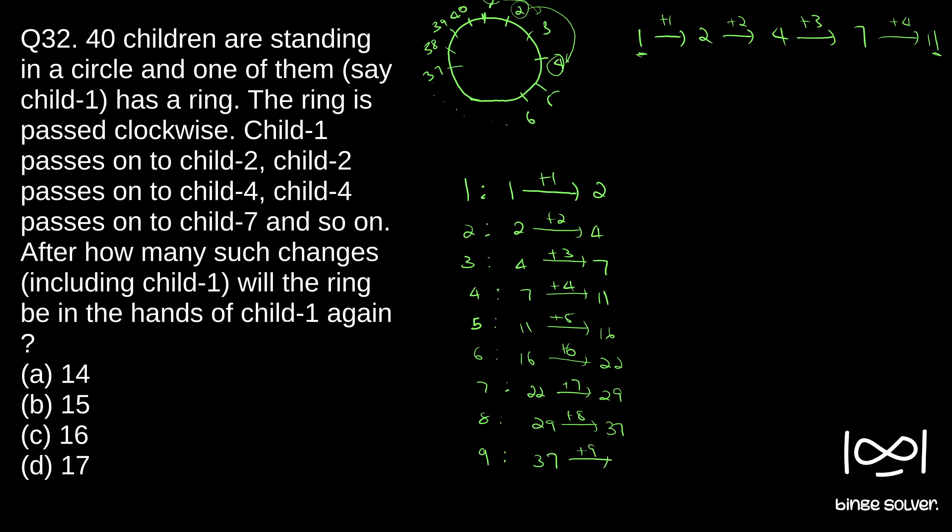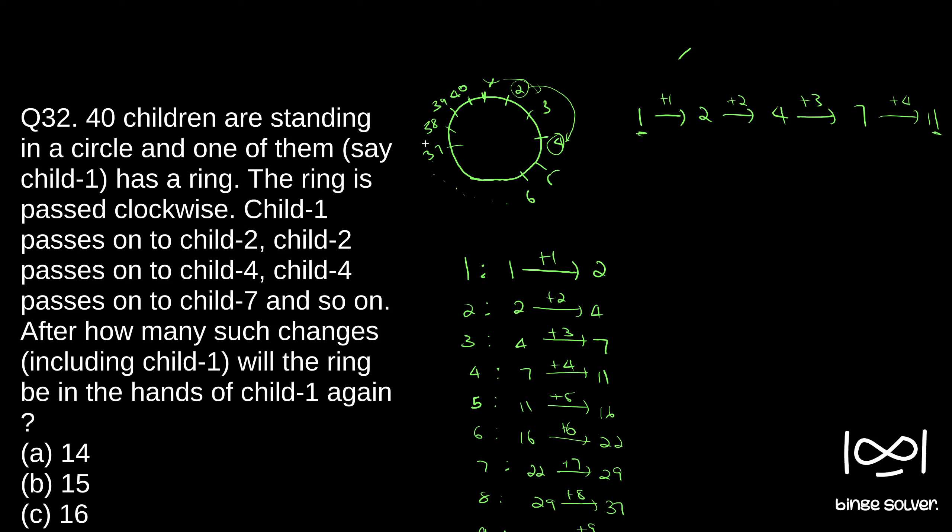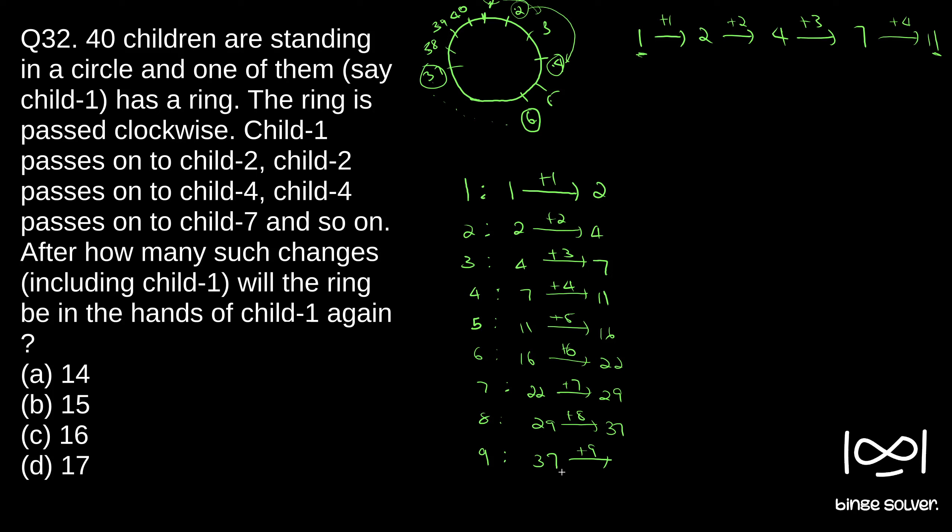So if you see what happens, pass 8 gives 37. So 37th person plus 9, so sixth person will get the ring again. So that is 37 plus 9, that is 46. So after 40, again 1, 2, 3, 4 repeat. So 46 means sixth person gets the ring again. So ninth pass, sixth person is getting the ring. In the tenth pass, sixth person plus 10, 16th person again gets the ring.